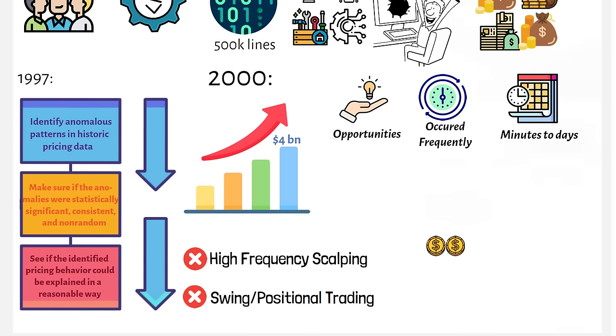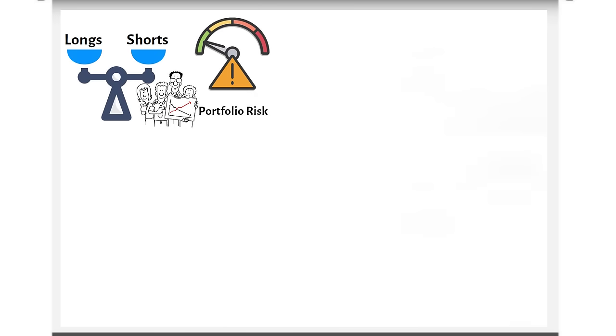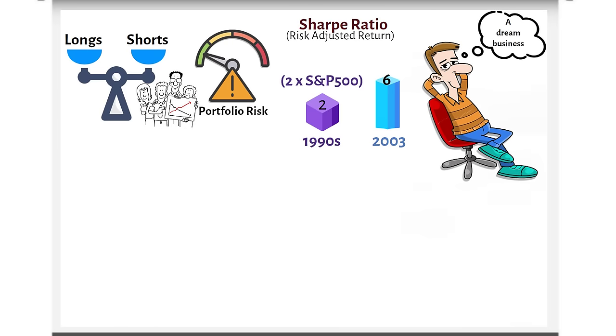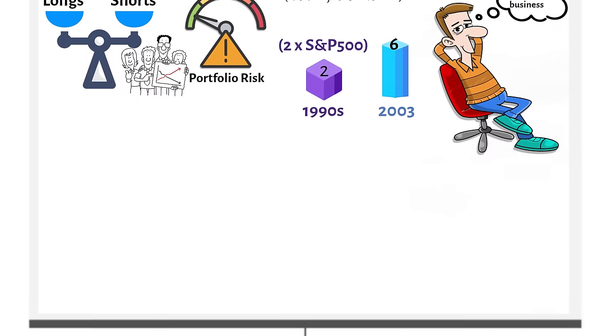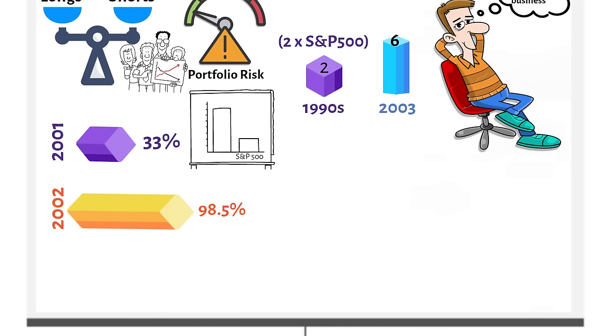The fund kept on accumulating smaller returns, enhanced by leverage, and building huge returns overall. The market-neutral portfolio of longs and shorts kept the portfolio risk extremely low. Medallion's Sharpe ratio, a measure of risk-adjusted return, averaged two in the 1990s, double that of the S&P 500. The ratio further soared to six in 2003, with some improvements in the trading system. This essentially meant that there was very little risk of the fund losing money over a whole year. Medallion's returns soared with a 98.5% return in 2002 and a 33% return in 2001, significantly beating the S&P 500, which delivered 0.2%, whilst other hedge funds averaged 7.3%.